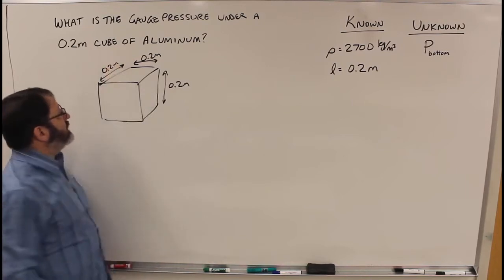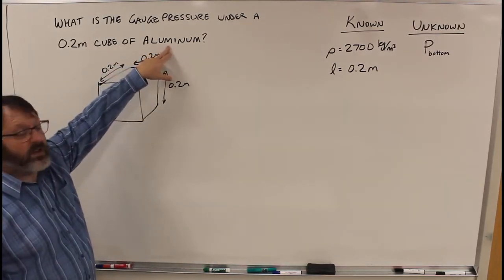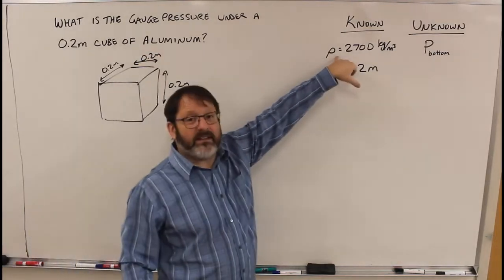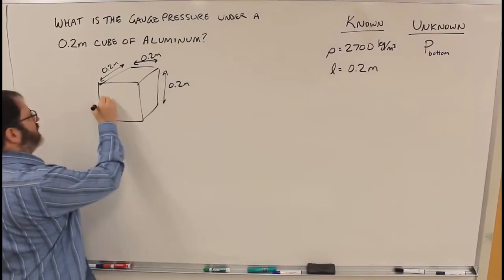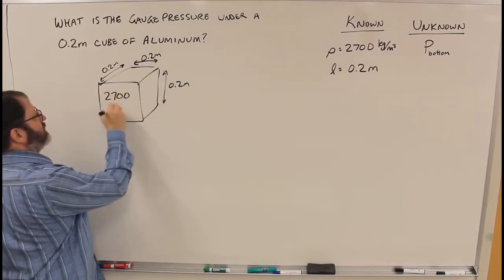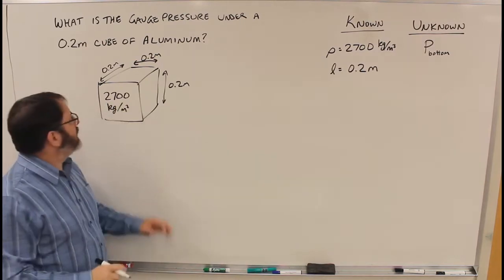Alright, so we've got a cube like that. It's made of aluminum, and so what I did was I looked up the density of aluminum. It's 2,700 kilograms per cubic meter.